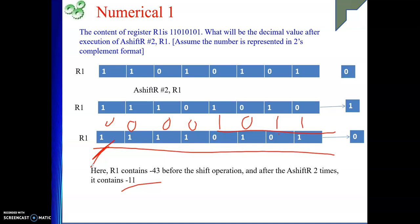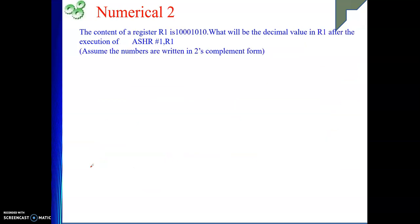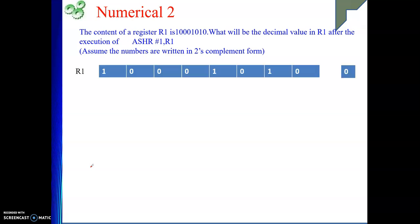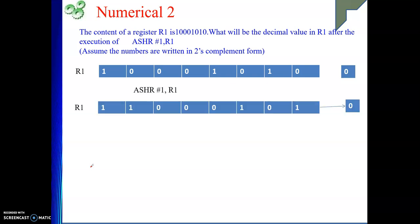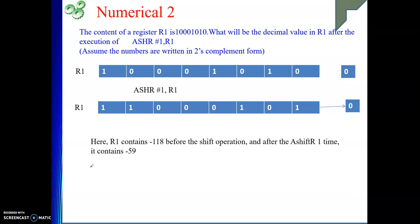Another one. The register R1 content is given. We are performing the operation and they ask for the value. Initially R1 is having this content, and after performing the operation it becomes the result. In the beginning it was minus 118, and this result is minus 59. It is exactly divisible by 2, so we are getting minus 59.